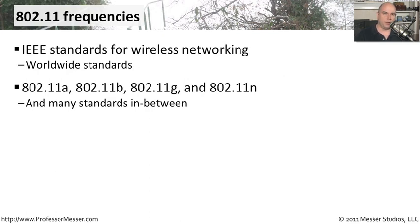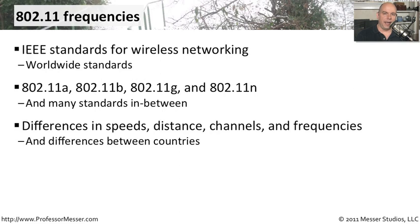When we talk about our wireless networks, we usually refer to them by standard — for example, 802.11b or 802.11n. There are other standards intermixed in between all of those, but the large overriding standards are listed as a, b, g, and n. There are many differences between all these standards, including differences in speeds, distances, and the types of frequencies that can be used.